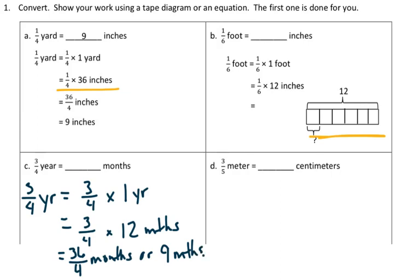The next one I'm going to do, D, I'm going to use a tape diagram. No, I apologize. I'm going to use the equation for this one as well. So, I have 3 fifths of a meter is equal to blank centimeters. I have 3 fifths of a meter is equal to 3 fifths times 1 meter, which is equal to 3 fifths times 100 centimeters. Again, they need to know their conversions.